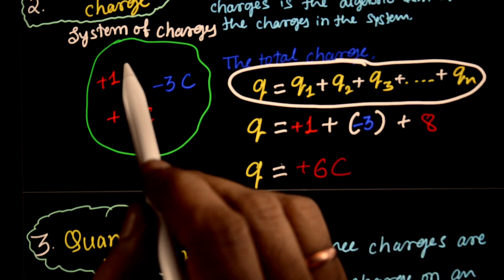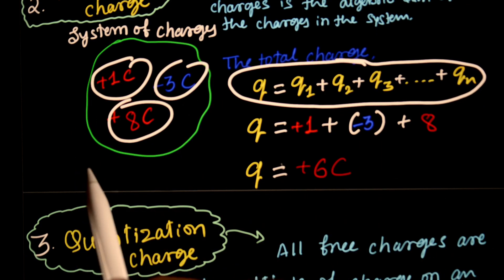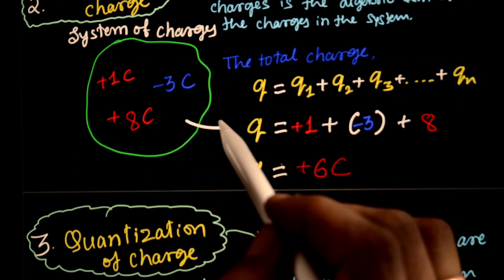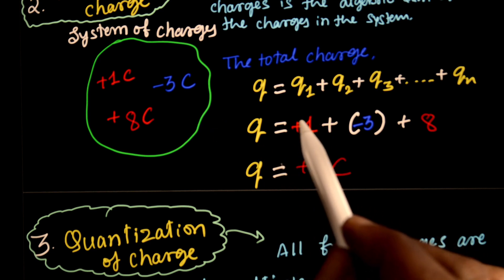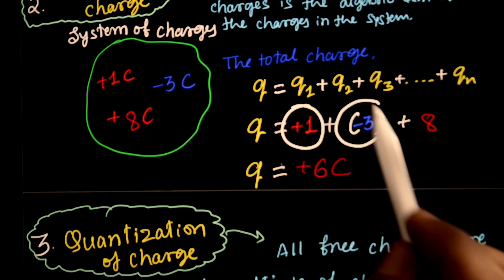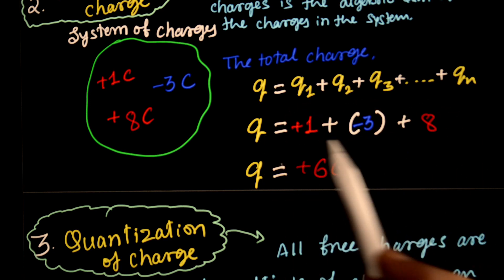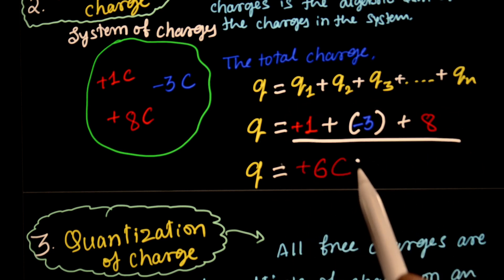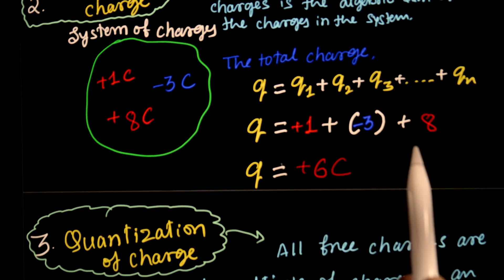Suppose here we have 3 charges. The net charge on this system: Q equals 1 coulomb minus 3 coulomb plus 8 coulomb charge. If you add all these, what do you get? You will get 6 coulomb of charge.